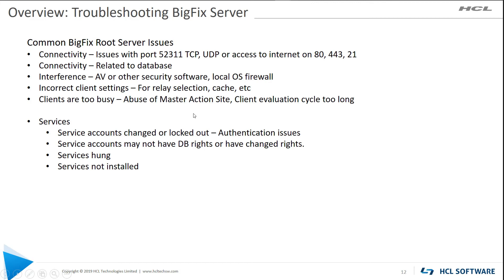Troubleshooting your root server — just like the client, remember your root server is also running a client. You can't have a BigFix install without a client on the root server; it does a ton of work for us. Check connectivity to the default port, both TCP and UDP. Also check whether something is blocking port 80, port 443, or port 21 outbound — those ports are used by the root server to gather content. If it can't connect to those, it won't be able to gather content. If you're in an air-gapped environment there's a whole separate process to follow.